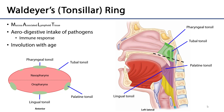Waldeyer's tonsillar ring is a collection of mucosa-associated lymphoid tissue (MALT) found in the pharynx. These discrete clumps of MALT are referred to as tonsils, and they represent a way for your body to deal with any pathogens taken in through the aerodigestive pathway — anything inhaled through the nasal cavity or consumed through the oral cavity has to eventually contact mucosa hosting this MALT tissue.